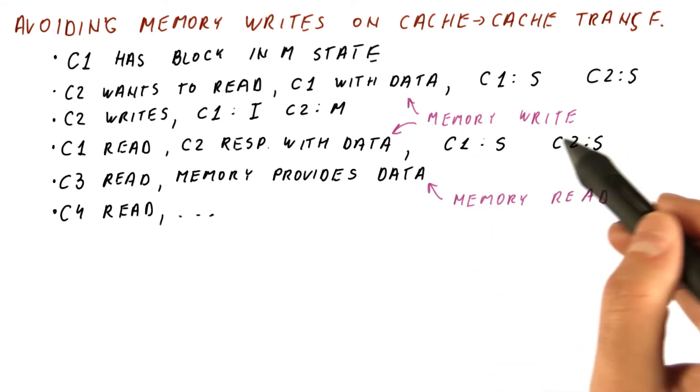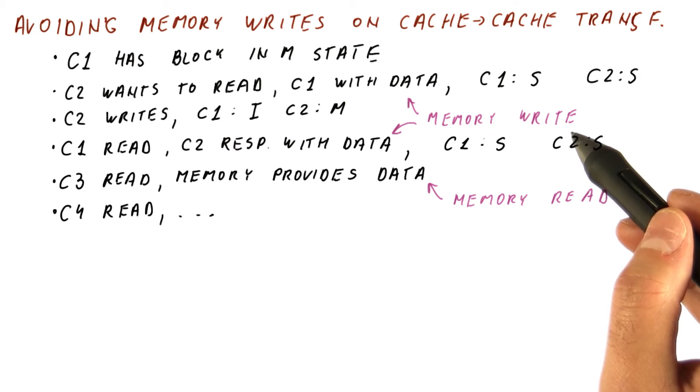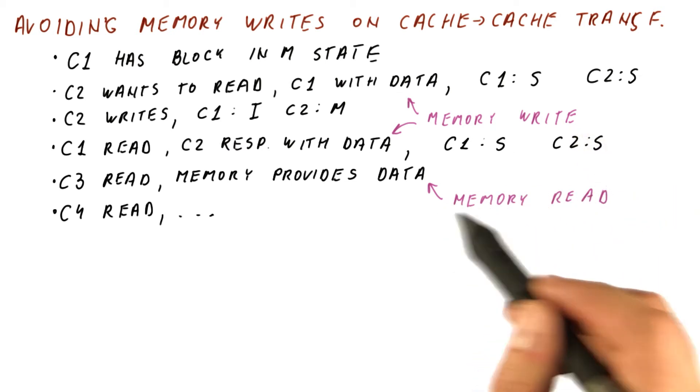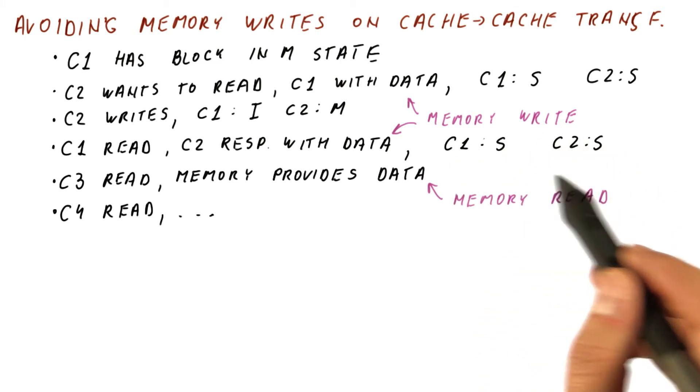We want to avoid the update to memory as long as there is a cache that still holds the most recent value of the block. And we want to avoid memory reads if there is a cache that can provide this block.